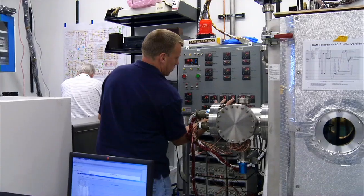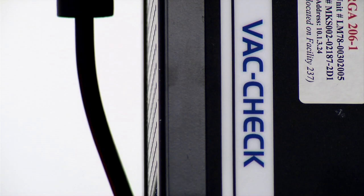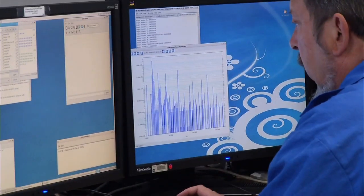We need the Mars Chamber on Earth so that we can operate the SAM testbed and run all the experiment sequences that we hope to run on the Martian surface.